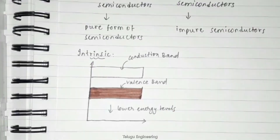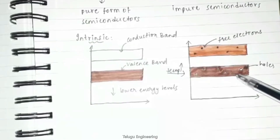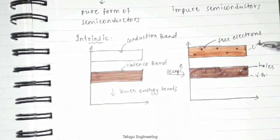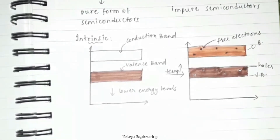With a rise in temperature, some electrons move from the valence band to the conduction band. The valence band will have holes for the lost electrons, and the conduction band will have free electrons. The electrons in the conduction band move randomly, and the holes created in the crystal are also free to move. This behavior shows that semiconductors have a negative temperature coefficient of resistance.